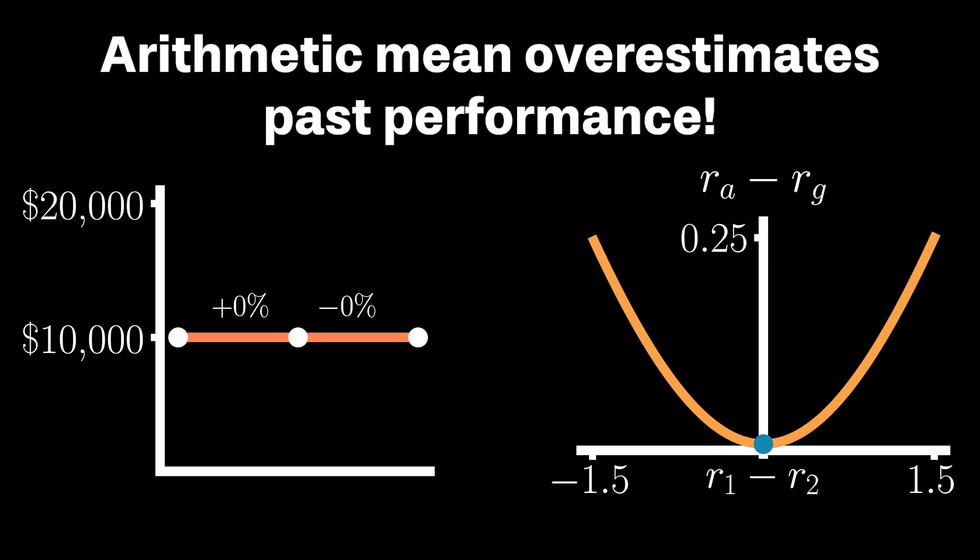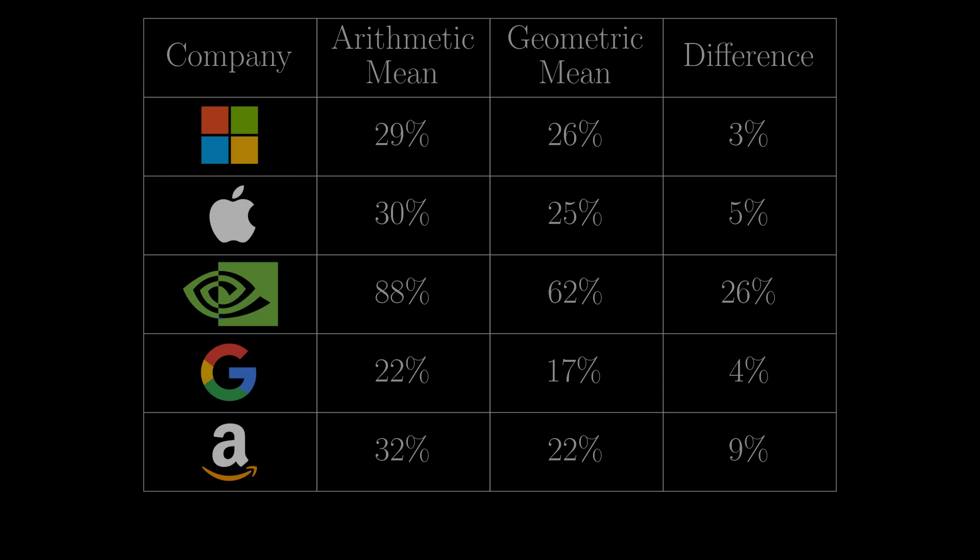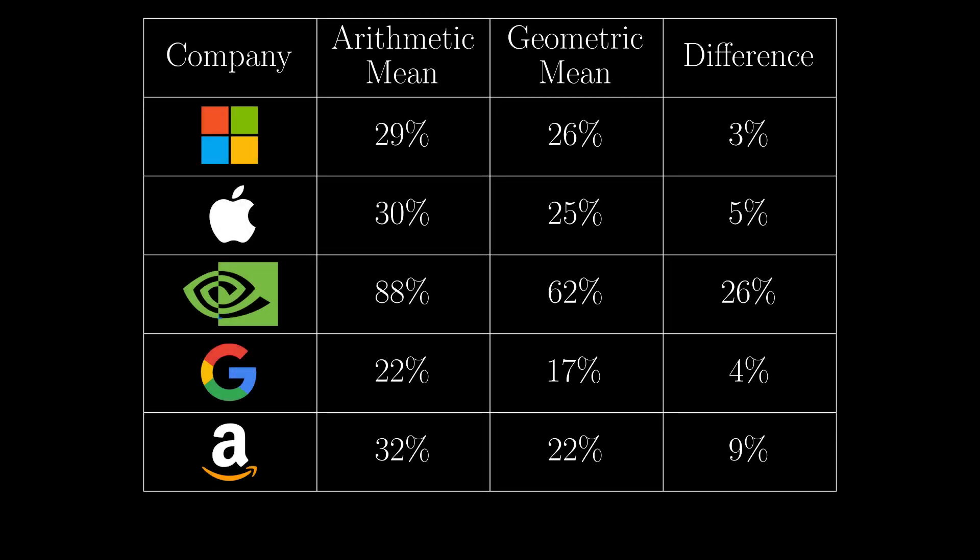And so to highlight the practical significance of this, I decided to look at the annual return of the five largest companies in the U.S. over the last 10 years and compare their arithmetic mean returns to their geometric means. Now, putting together this table made me really regret not investing in NVIDIA years ago, but that is another story. What we can see here is that if you invested in any of these companies, you have done quite well for yourself, far better than Frank. But you can also see that the arithmetic mean is larger than the geometric mean by 3 to 26%, which is definitely not a trivial amount.